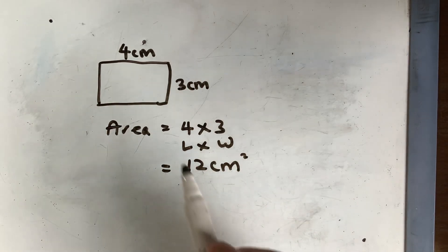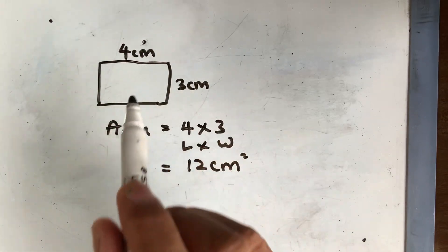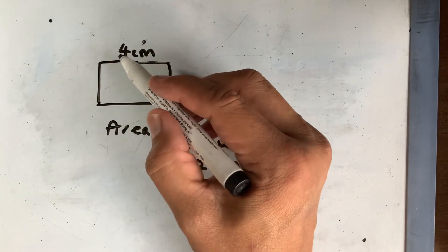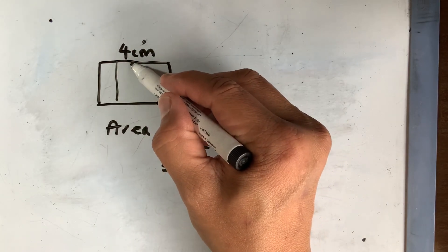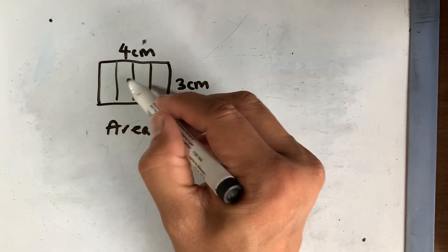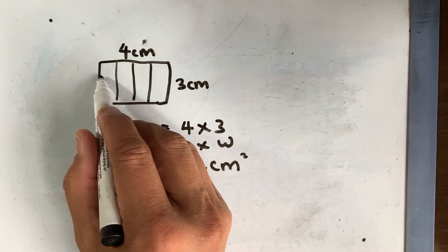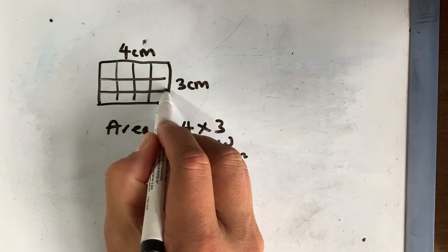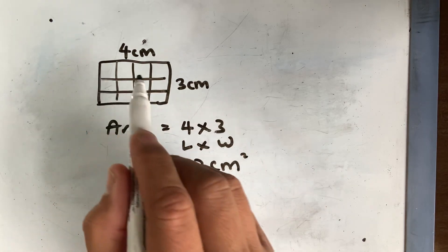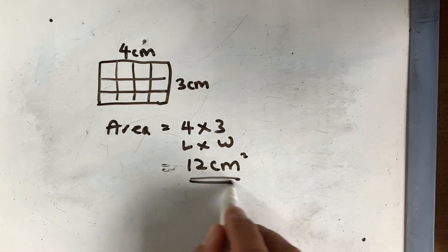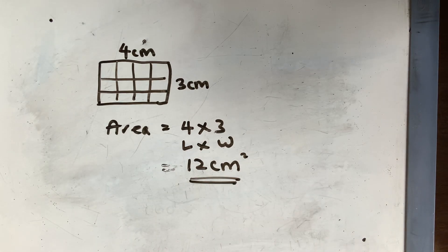What this actually means is that we break the rectangle into unit squares. For example, 4 cm gives you 4 columns — 1, 2, 3, 4 — and 3 cm gives you 3 rows. If you count all the squares inside the rectangle, you get 12, and that's why the area of that rectangle is 12 cm squared.